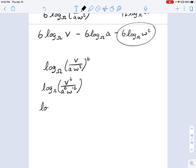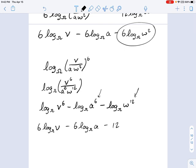Okay, and now you can see why this is logarithm base omega of v to the 6th minus, because that a is in the denominator, minus logarithm base omega of a to the 6th minus logarithm base omega of w to the 12th, which then individually, you can bring all these exponents in front to make this 6 log base omega v minus 6 log base omega a minus 12 log base omega w.